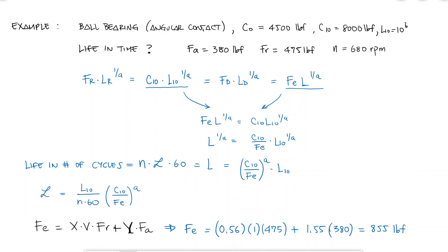With the new equivalent force of 855 pounds, I can go back and find the life in hours of this bearing that is rotating at 680 RPM. Notice that the only difference here today is that I am not using a radial force, but an equivalent force.